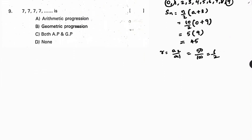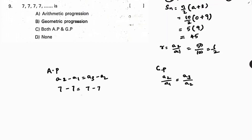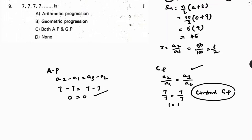Next: is the sequence 7, 7, 7 an arithmetic progression, geometric progression, or both? For AP: a₂ − a₁ = a₃ − a₂ ✓. For GP: a₂/a₁ = a₃/a₂ ✓. Since both conditions are satisfied, it is both AP and GP. Correct option is C.